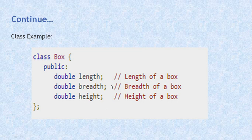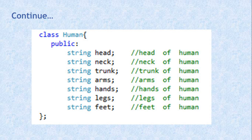To make the Box class complete, we should add member functions. For example, functions to find area and volume. Once we have all the properties and relevant member functions, this becomes a complete class.